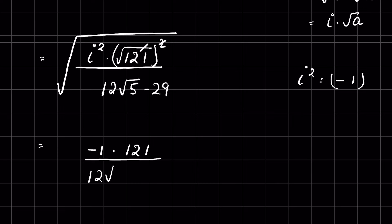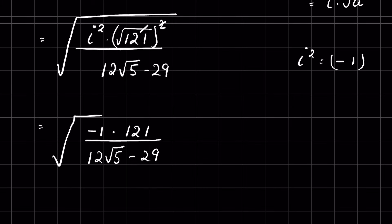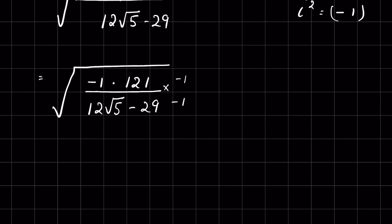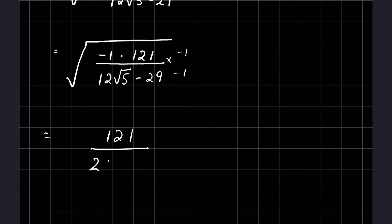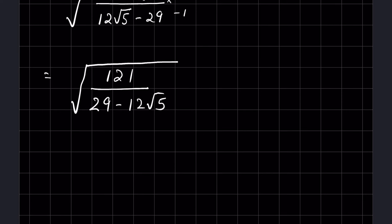So we have -121 divided by (12√5 - 29), all under a square root. We multiply and divide by -1, so it becomes 121 divided by (29 - 12√5), all under a square root.